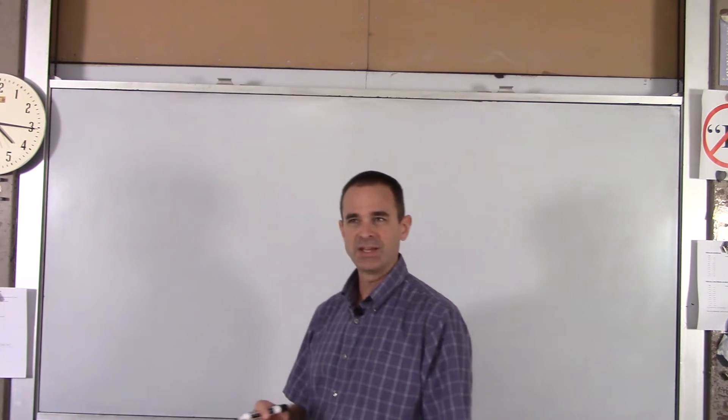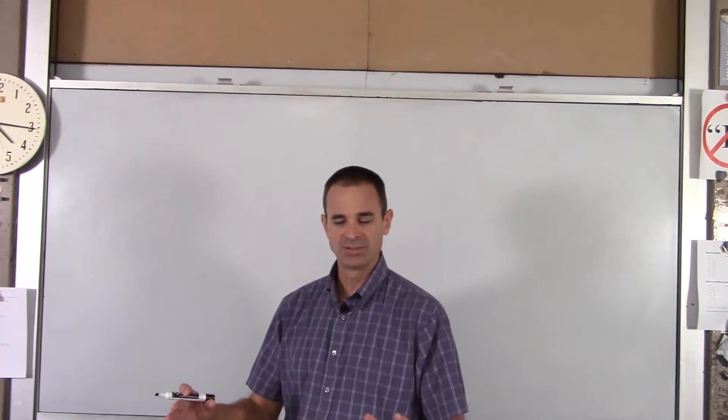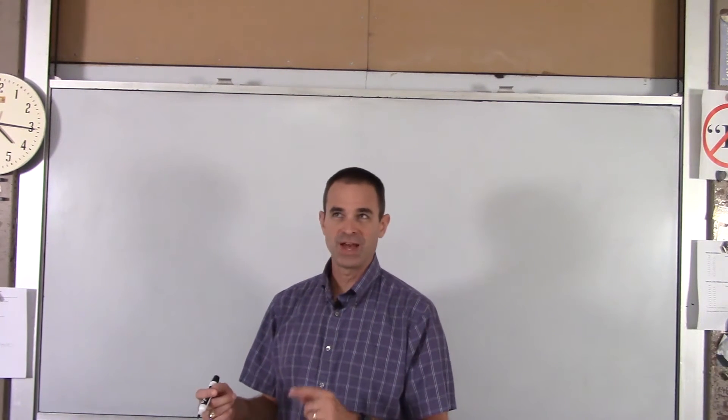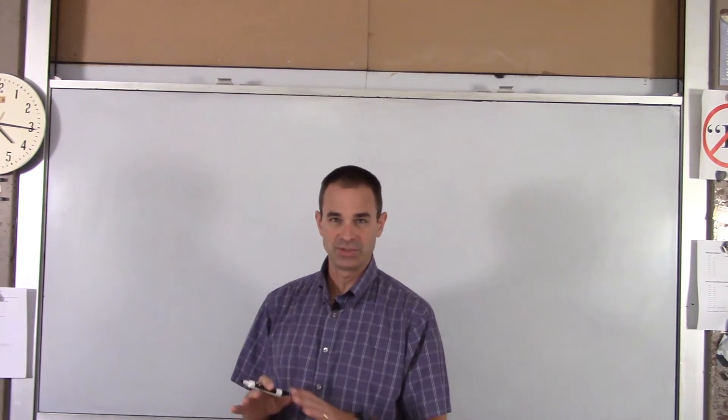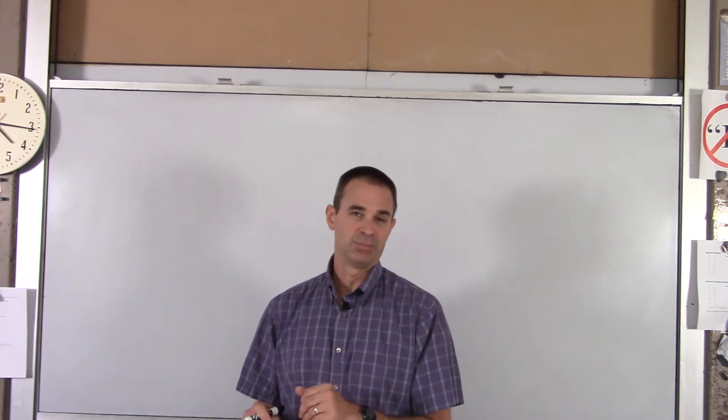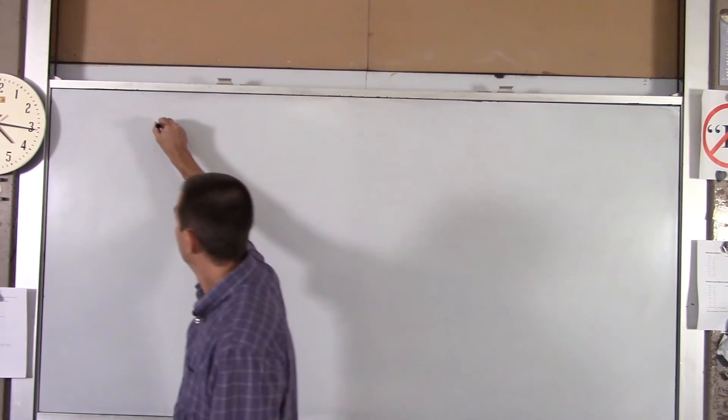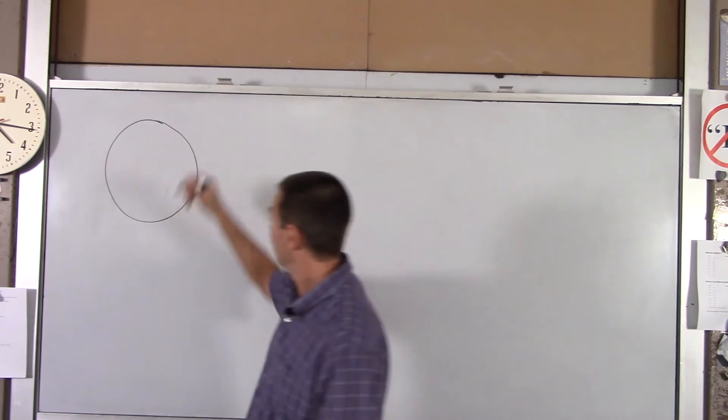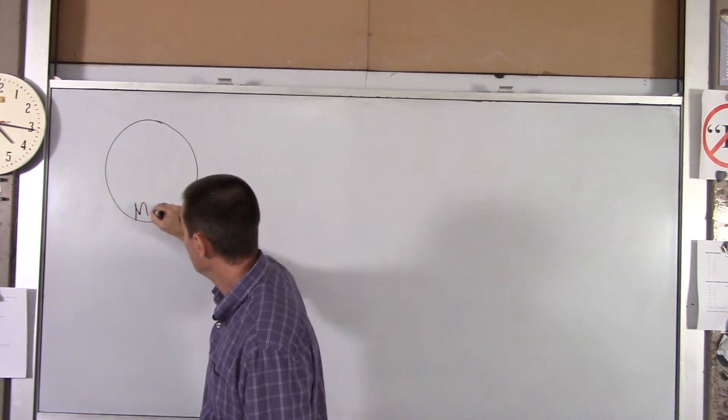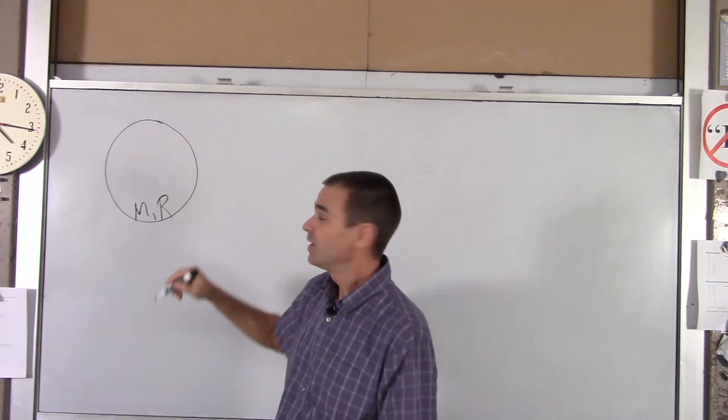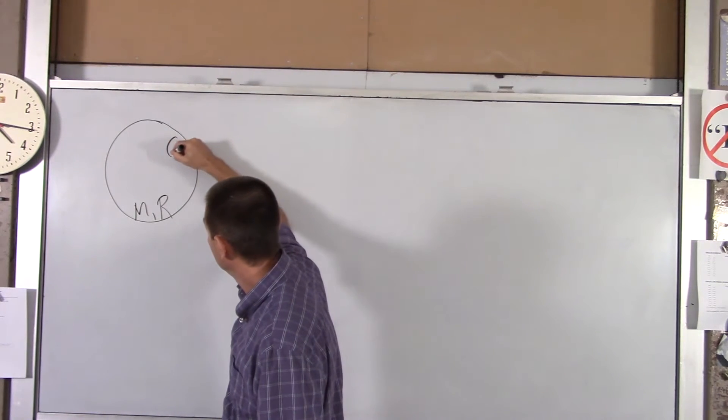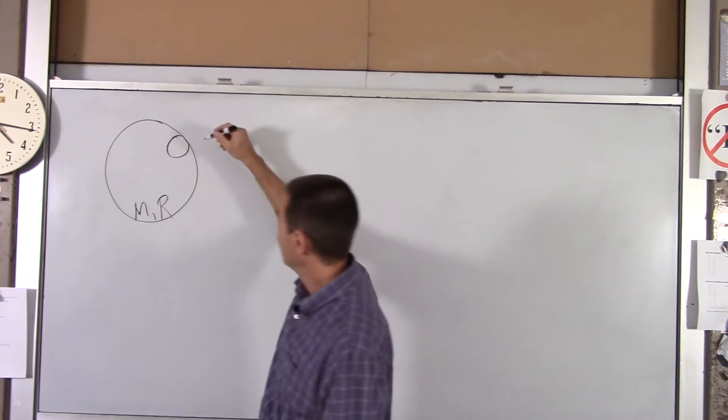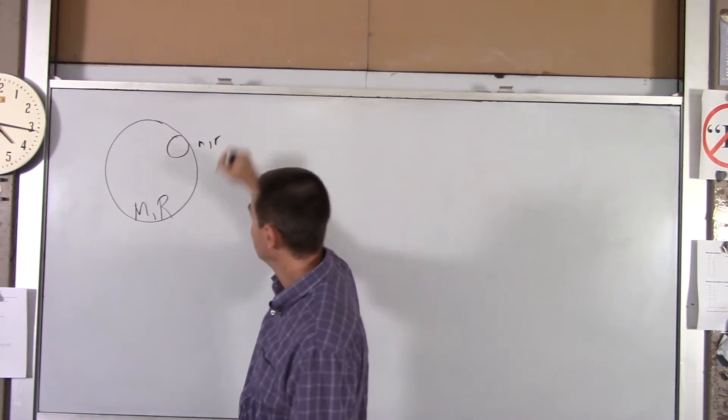So we're going to have a merry-go-round, and on top of the merry-go-round we're going to put a manhole cover, such that the edge of the manhole cover is tangent to the edge of the merry-go-round. So there's our top view of the merry-go-round. It's got a mass big M and a radius big R. And I'll put the manhole cover such that its edge is tangent to that. It's got a mass little m and a radius little r.